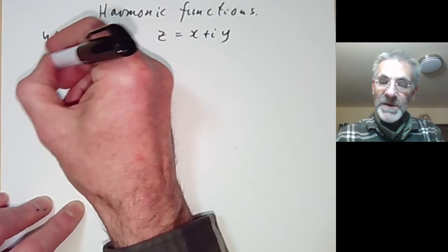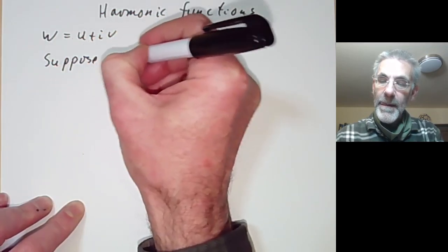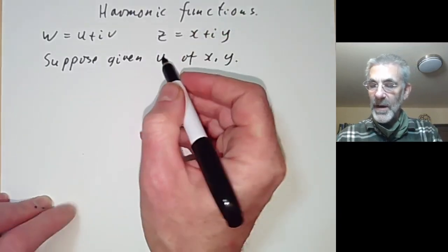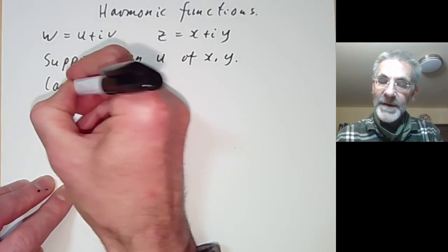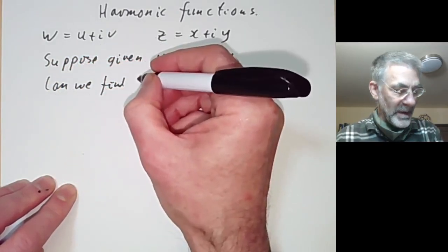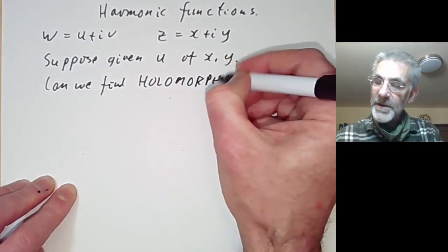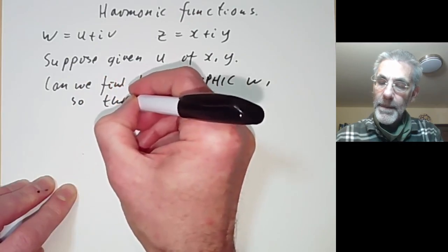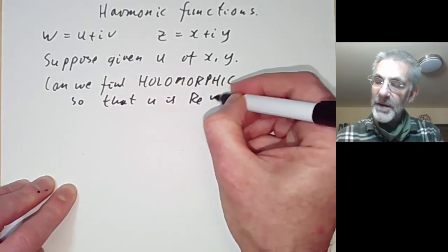We have the following problem. Suppose we're given a function u of x and y — a function of two real variables. Can we find a holomorphic function w so that u is the real part of w?